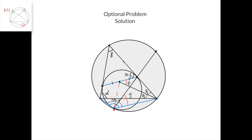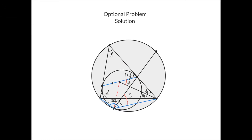From this it follows that this is a cyclic quadrilateral since this angle equals this angle, and therefore this is the angle bisector of this angle as desired.